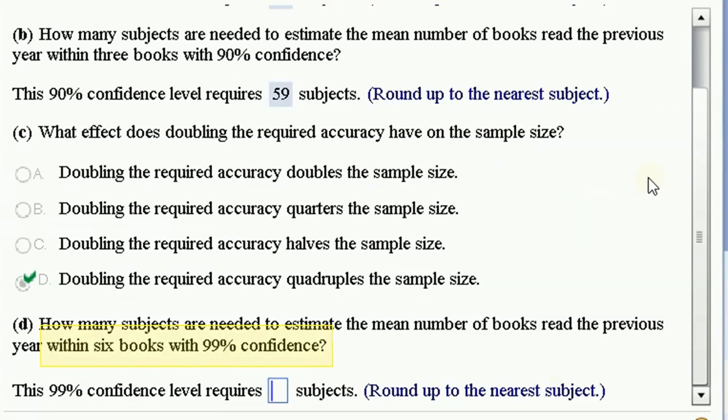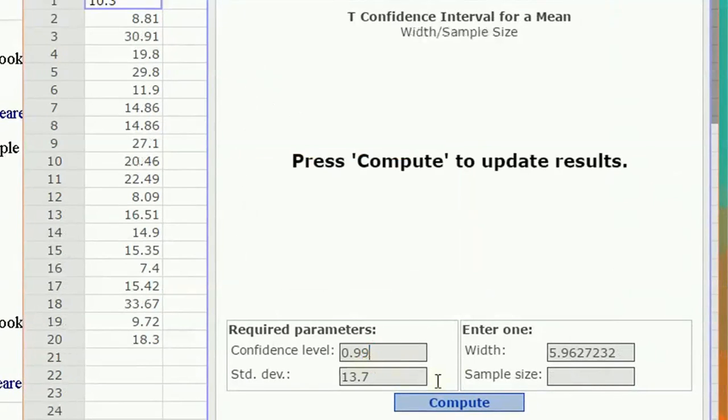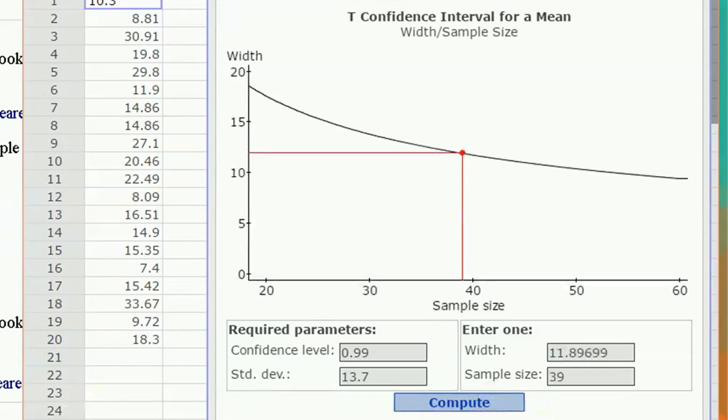How many subjects are needed to estimate the mean number of books within six books at 99% confidence? So this is now going from 90% confidence to 99% confidence. We're going to go within six books, that's a width of 12. Compute: 39 people.